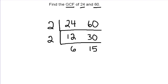And finally, 6 and 15 are not even, but I know 3 goes into both of those. So 6 divided by 3 is 2, and 15 divided by 3 is 5.